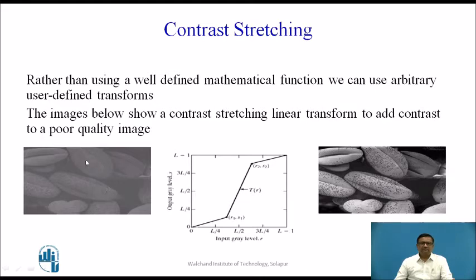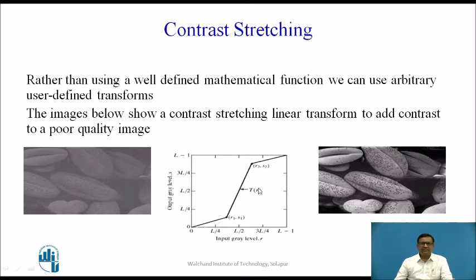This is the input image. The image has very low contrast, and if you apply this contrast stretching algorithm — this transform — on this input image, we get an output image like this. We see that a prominent enhancement operation has been done on this input image by using this contrast stretching transformation function.